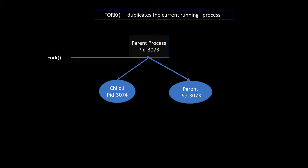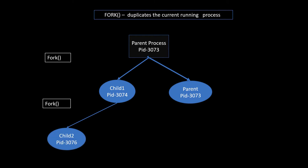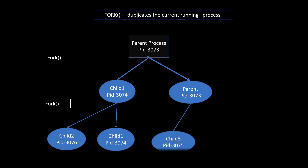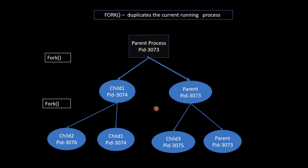If you check the PID, they will generally differ by one integer — that is a general case but not always. If you use fork again on the duplicate and parent process, it will create further processes. Child1 will create a Child2 duplicate, and similarly the parent process will create Child3. In total there are 3 child processes and one parent process, with two children and one grandchild relative to the parent.